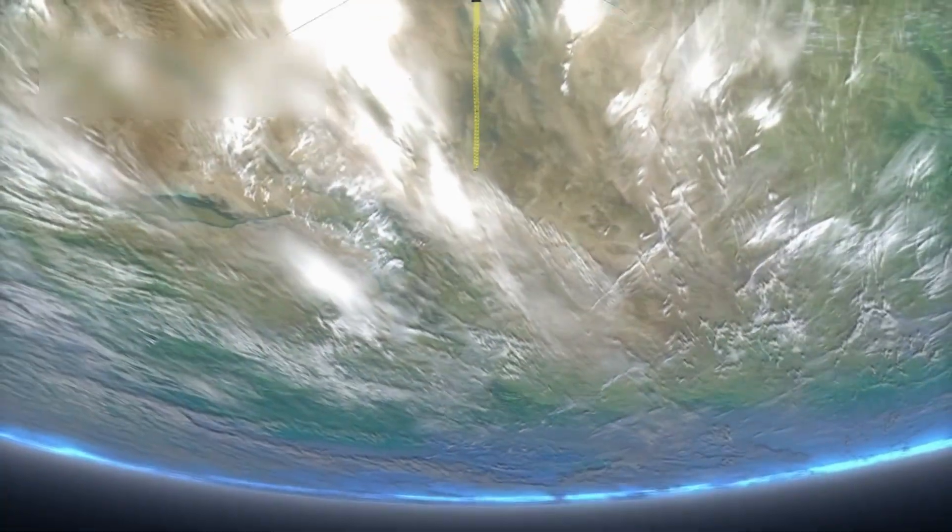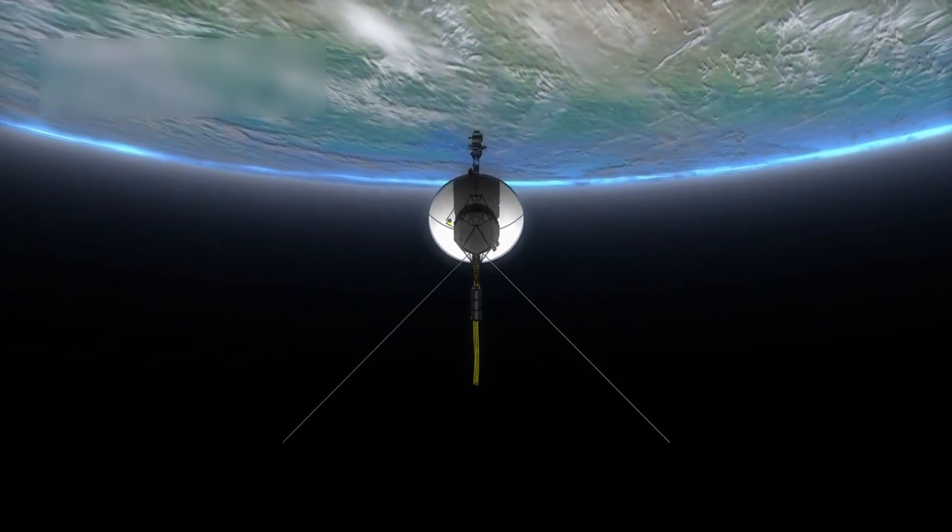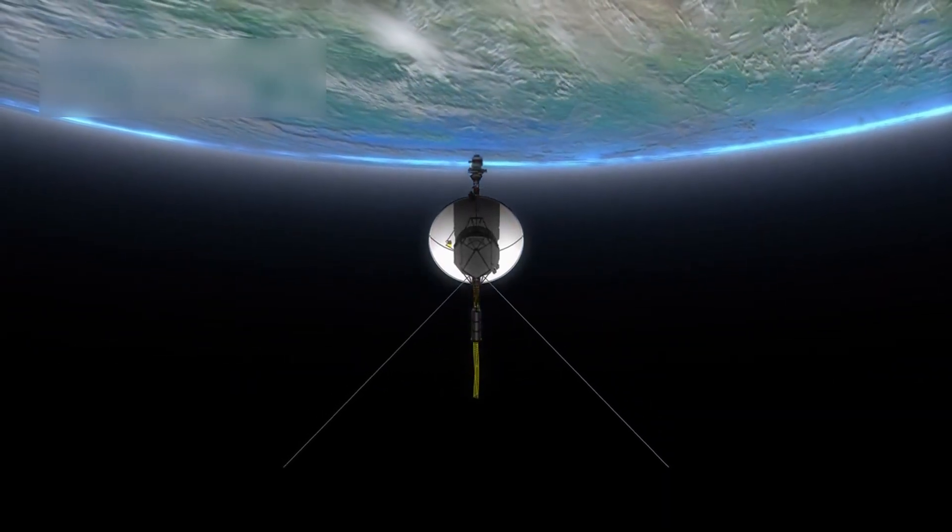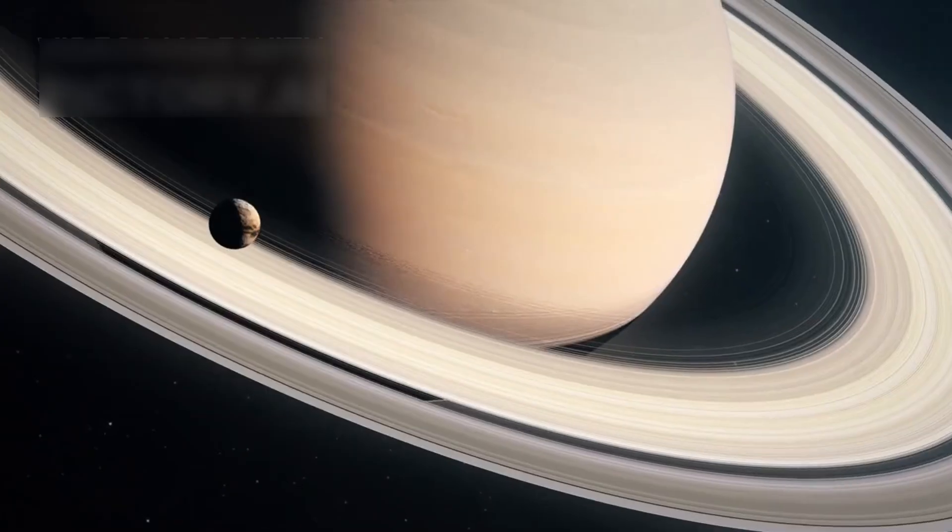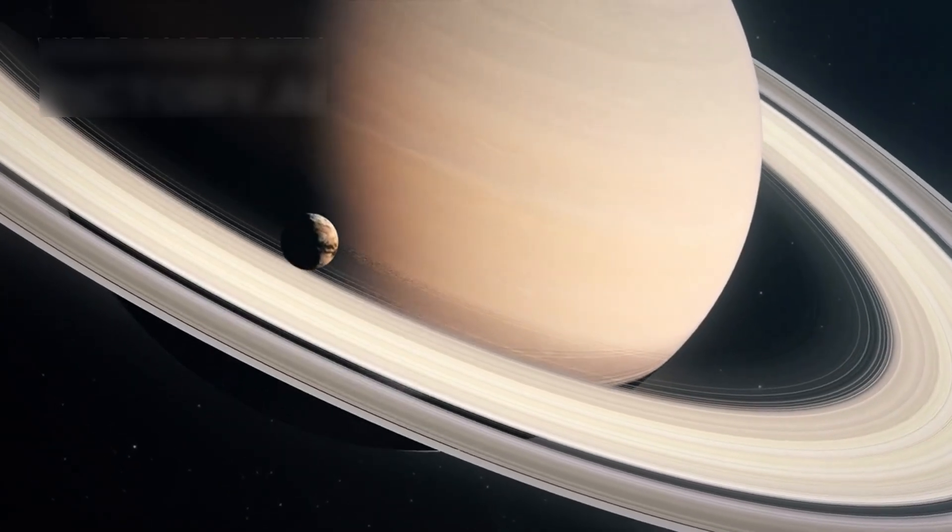NASA launched Voyager 1 and Voyager 2 just 15 days apart in 1977. Their initial mission was four years, focused on the gas giants.